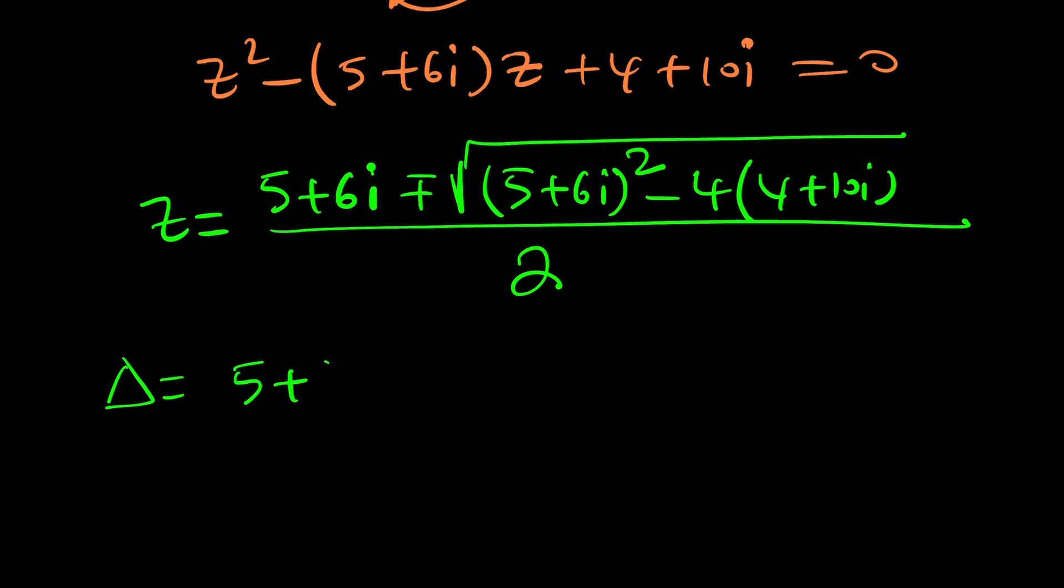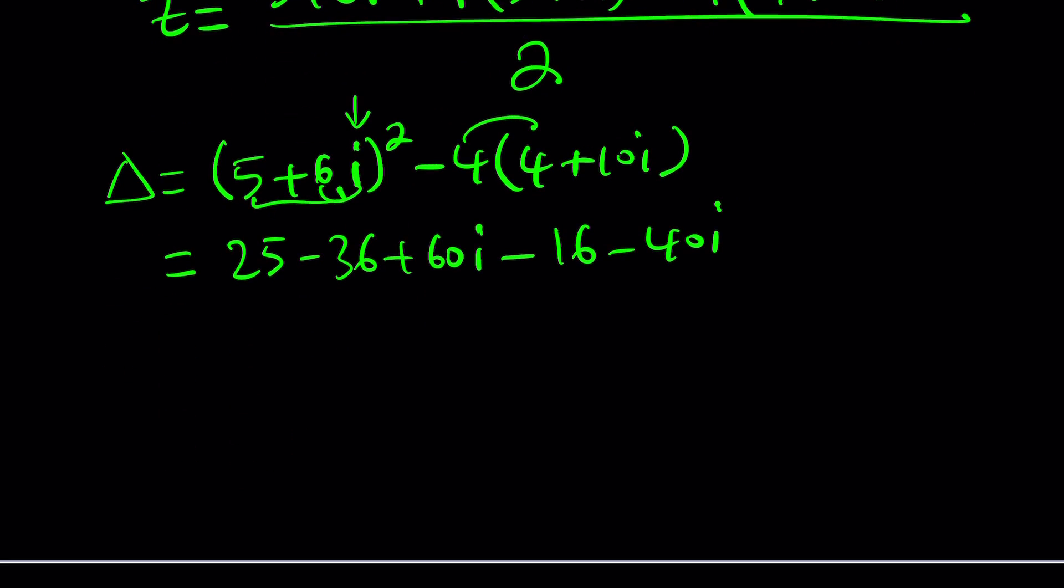Z equals negative b. The coefficient of z is b, remember, plus minus the square root of b squared. When you square b or negative b, it doesn't matter because when you square, it's going to be the same thing. Minus 4ac, which is 4 times 1 times 4 plus 10i. And then we're going to simplify inside the radical. And the whole thing is divided by 2a, which is 2. So let's go ahead and simplify what's inside the radical. By the way, that's called the discriminant or delta. So delta is equal to 5 plus 6i quantity squared minus 4 times the quantity 4 plus 10i.